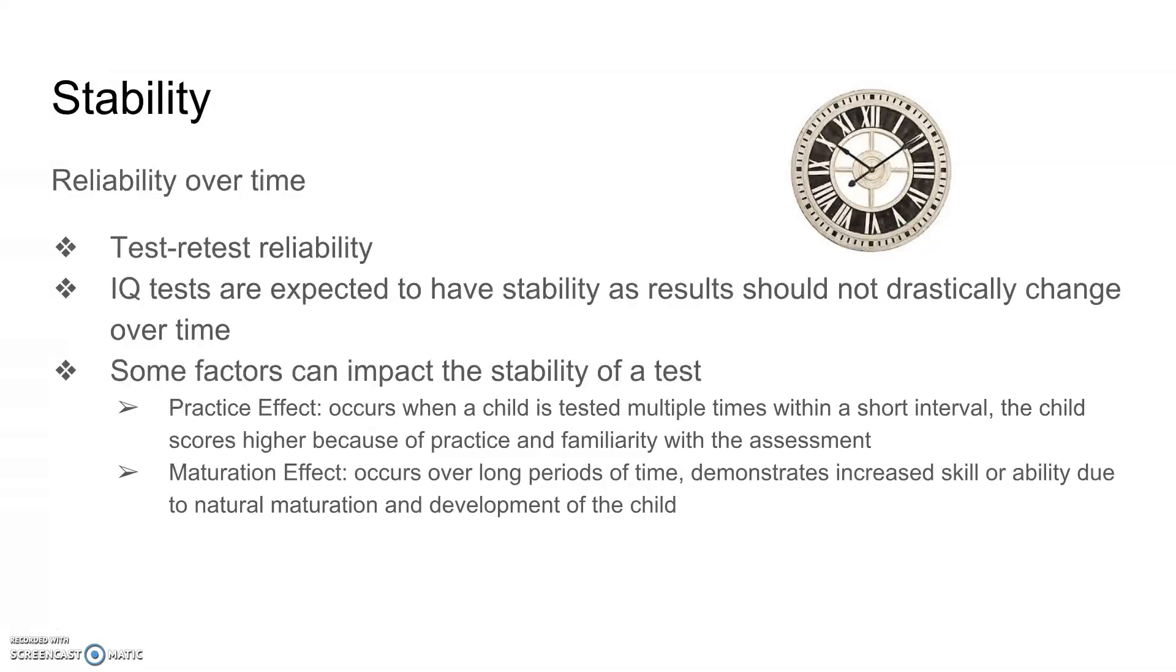The other kind of bias or impacting factor is what's called the maturation effect. This takes place over longer periods of time when the child increases in skill or ability simply due to natural development and maturation. So just their own growth over time.